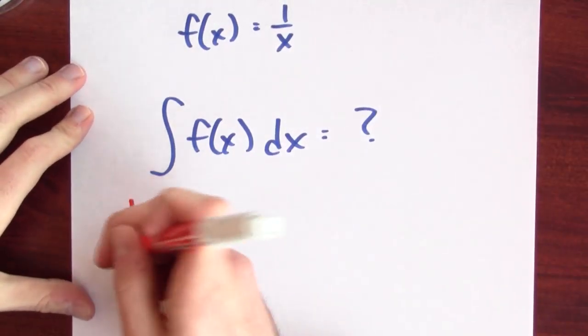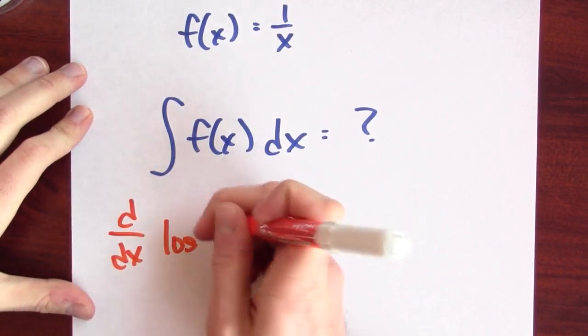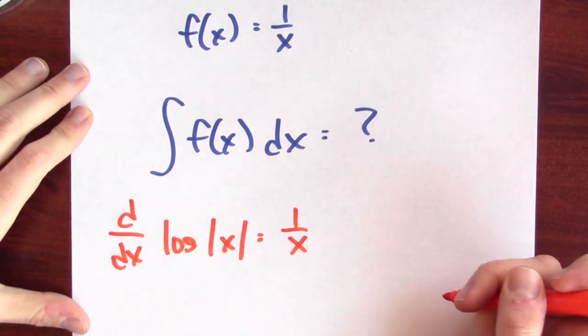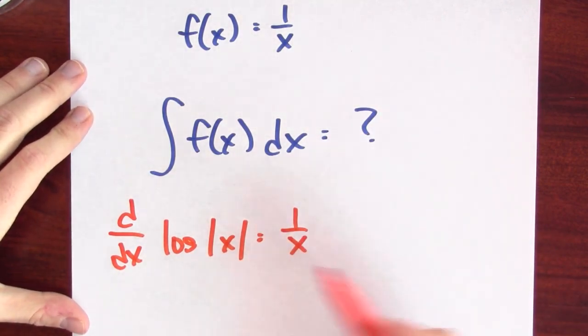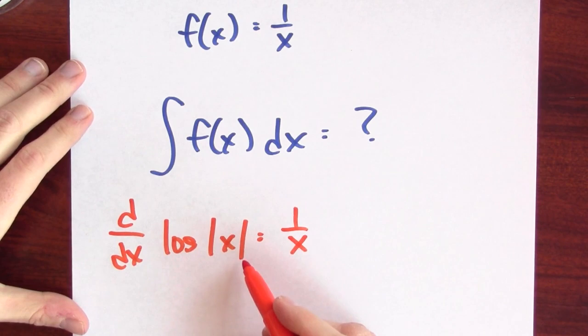I know an antiderivative: log of the absolute value of x. That's right, because the derivative of log|x| is equal to 1/x. So an antiderivative of 1/x is log|x|.